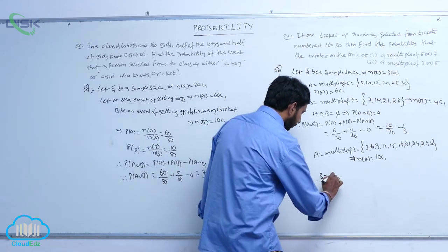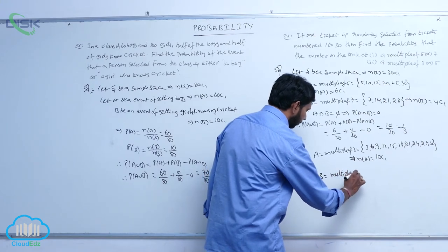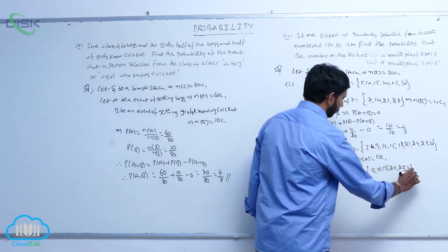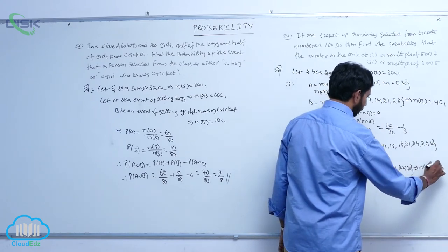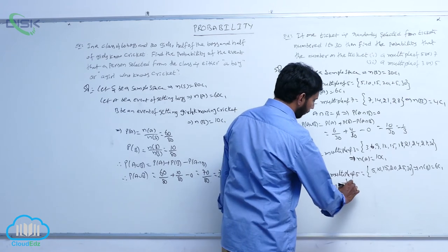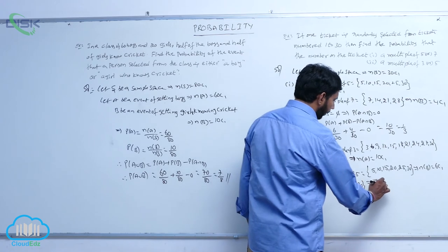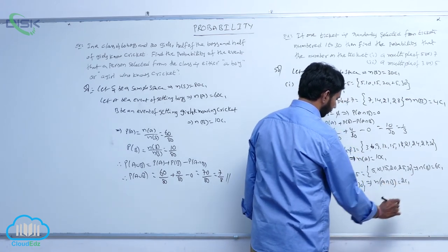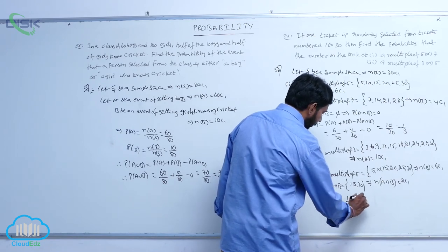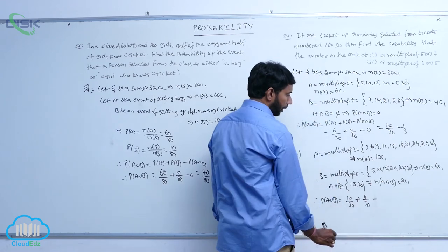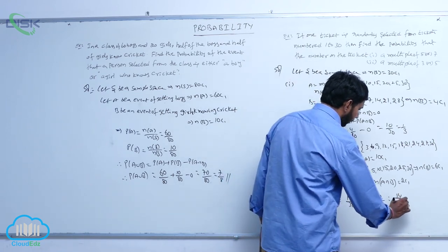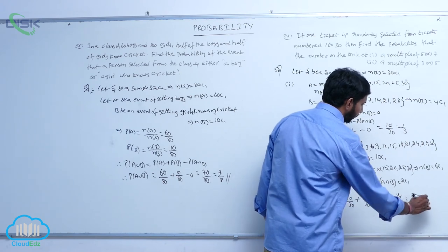And B is equal to multiples of 5: {5, 10, 15, 20, 25, 30}, so N of B is equal to 6 C1. A intersection B has two numbers in common, that is 15 and 30, so N of A intersection B is equal to 2 C1. Therefore P of A union B is equal to P of A plus P of B minus P of A intersection B, which is 10 by 30 plus 6 by 30 minus 2 by 30, equal to 14 by 30, equal to 7 by 15.